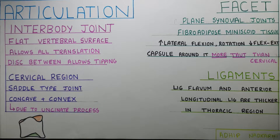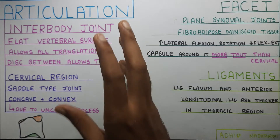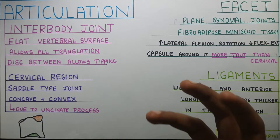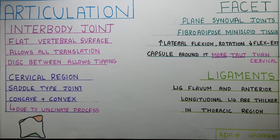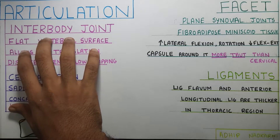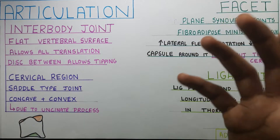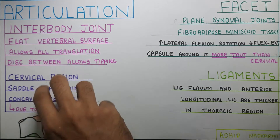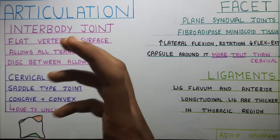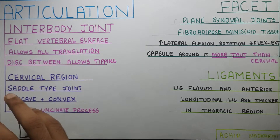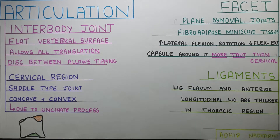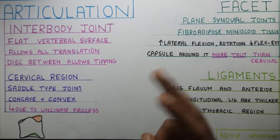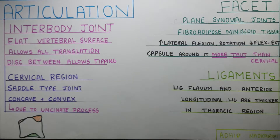In this video we are going to talk about the articulation at the thoracic spine. We have already discussed about the facets, and I just wanted to cover the interbody joints here. Also a few more points on facets, and then I wanted to compare the interbody joint of the thoracic and the cervical — I kind of skipped over that so I wanted to mention it as well. Then we will discuss some points on ligaments, and in the next video we will be talking about kinematics and kinetics together. So let's start with the topic.